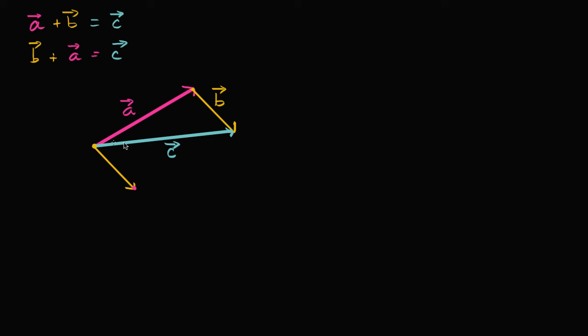So once again, a vector I can shift them around as long as I'm not changing the direction or their magnitude. So vector A looks like that. And notice, if you now go start at the initial point of B and go to the terminal point of A, you still get vector C. So that's why A plus B and B plus A are gonna give you the same thing.